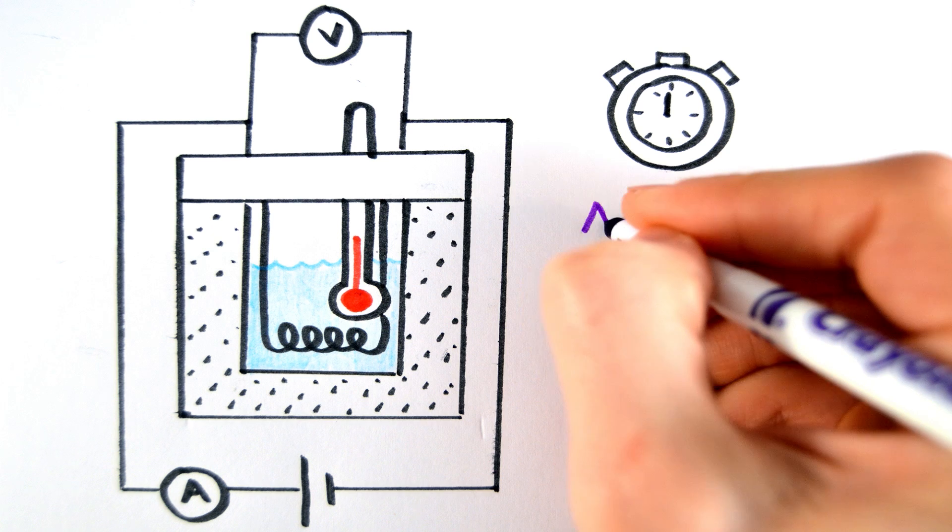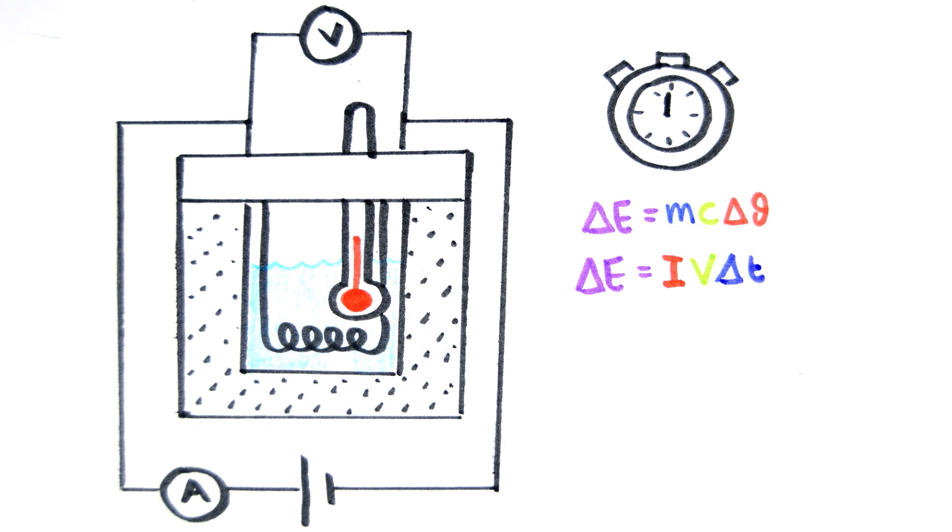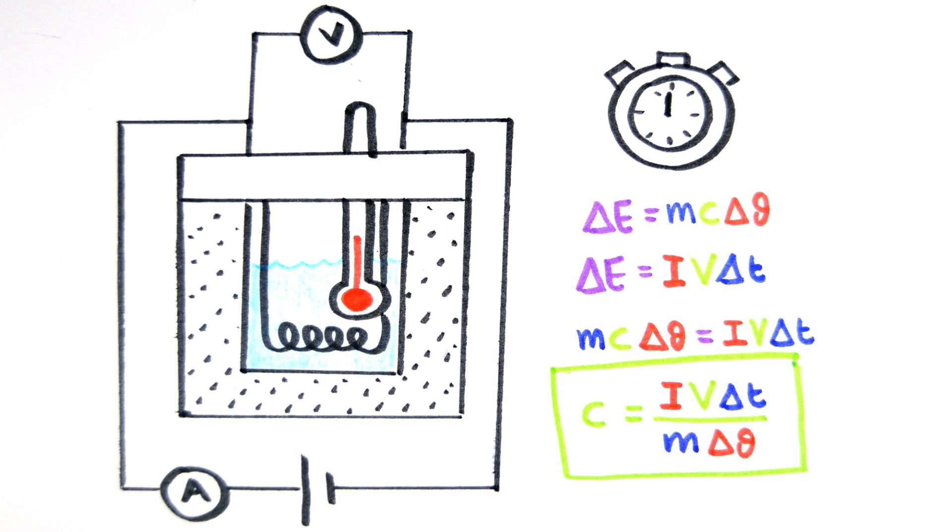Then using the equation ΔE = IVT and ΔE = mcΔθ, we can find the specific heat capacity as c = IVT / (mΔθ).